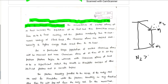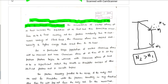When n₂ is greater than n₁ — more number of atoms in the excited state and less number of atoms in the ground state — population inversion is achieved. The accumulation of excited atoms at the metastable level increases the population at M level.